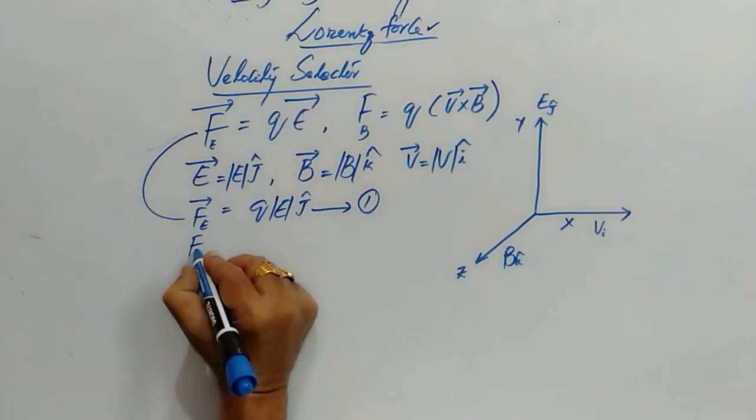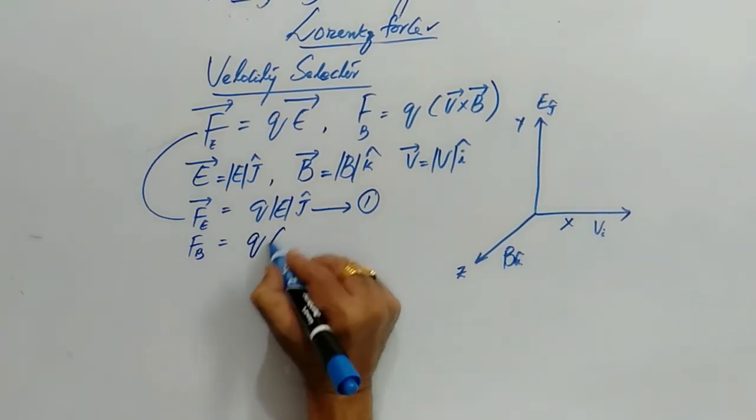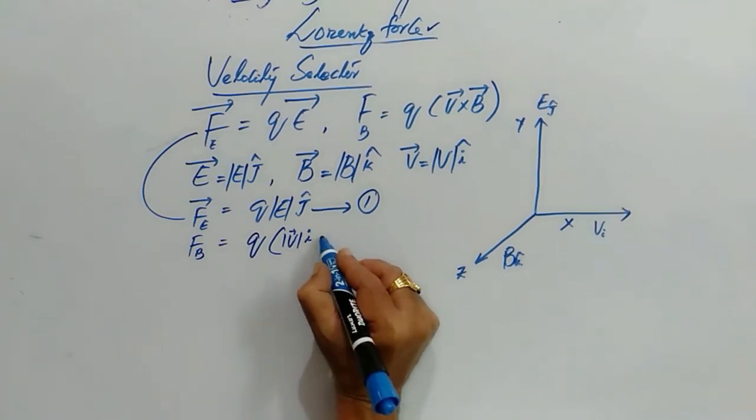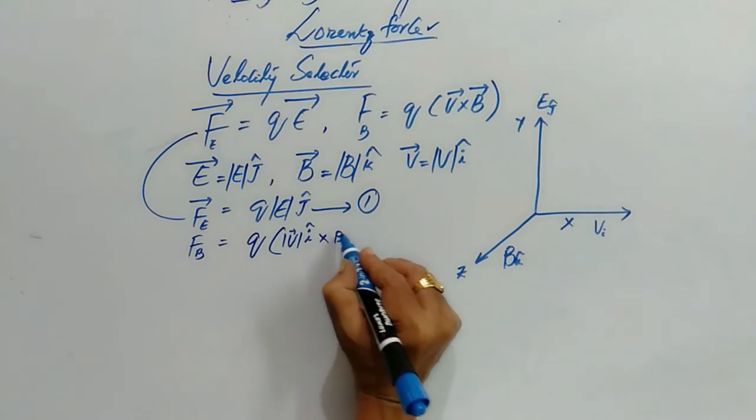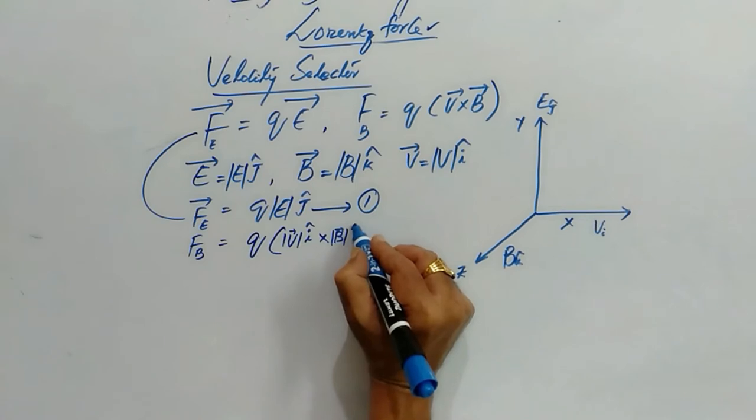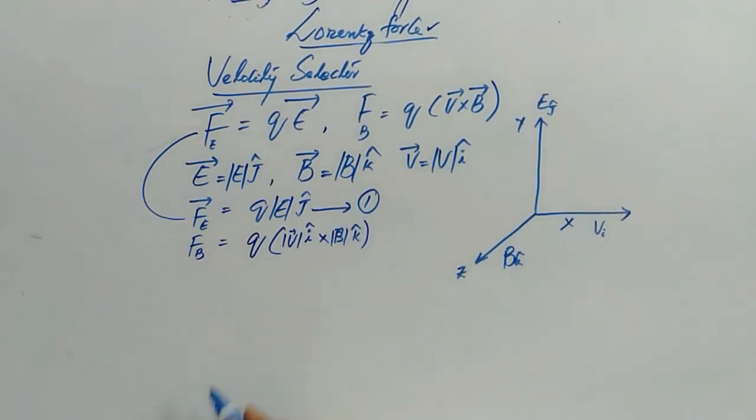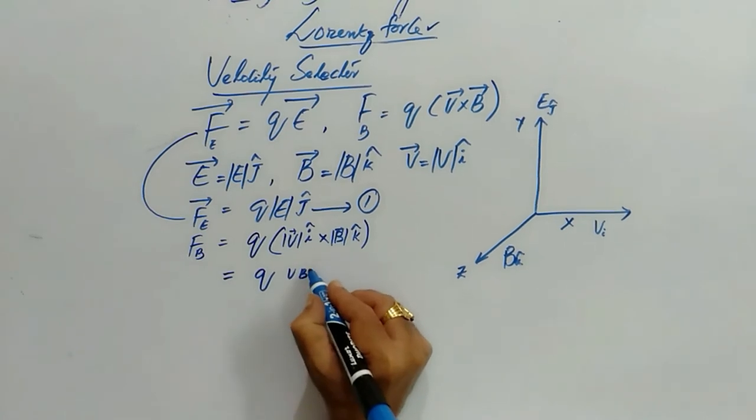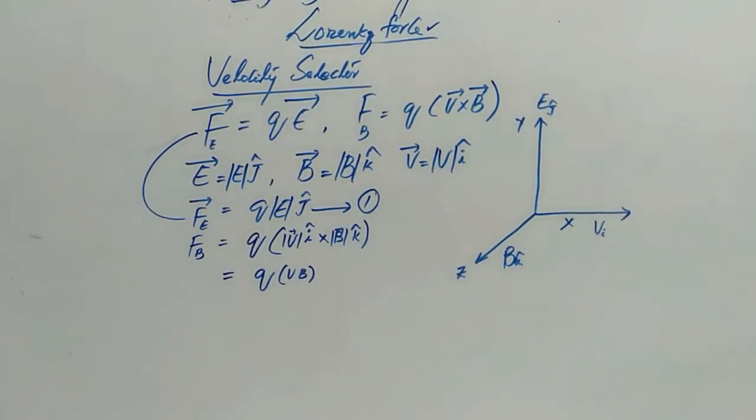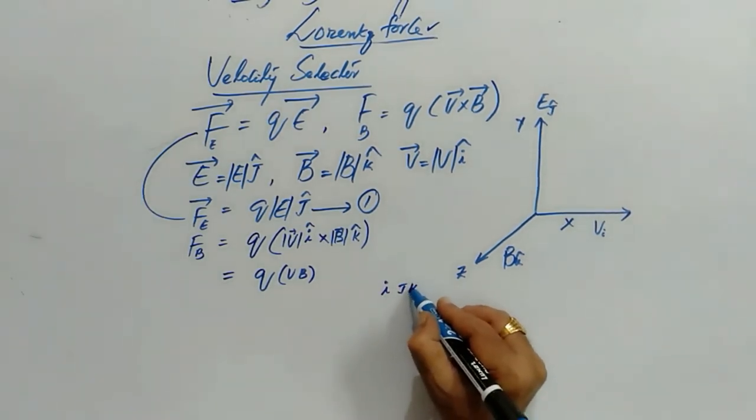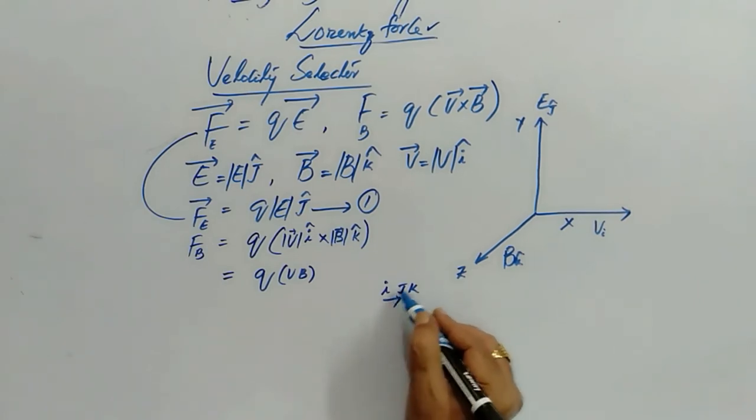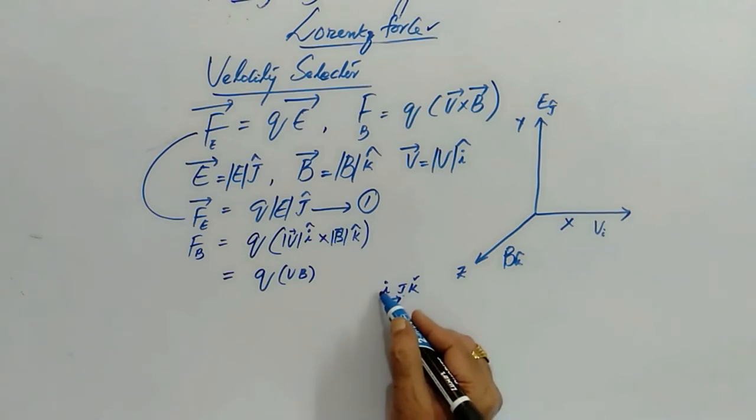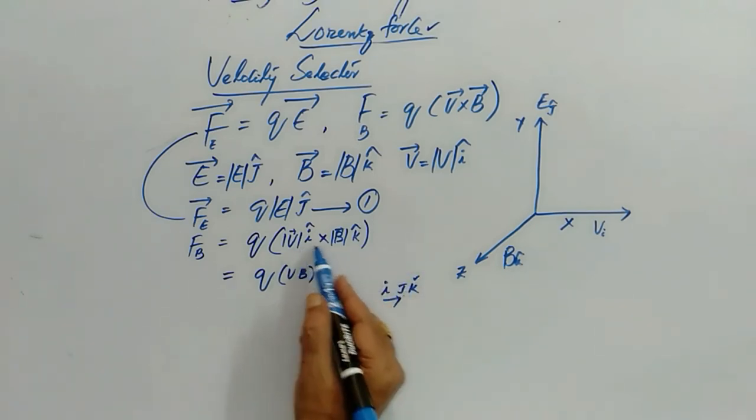Now the magnetic field is Q times V i cross B k. Now this will be Q V B i cross k. We know that if i cross j then it becomes k. If reverse is there i and k, j cross k is i and k cross i is j, but here it is i cross k.